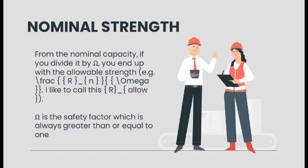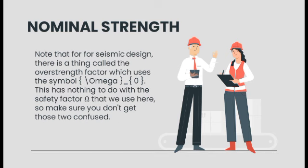From the nominal capacity, if you divide it by delta, you end up with the allowable strength. Delta is the factor of safety, which is always greater than one. Note that for seismic design, there is a thing called the overstrength factor, which uses a different symbol. This has nothing to do with the safety factor delta that we use here, so make sure that you don't get confused.